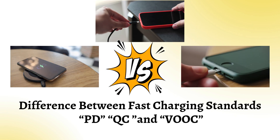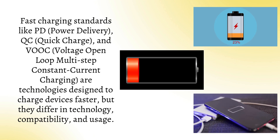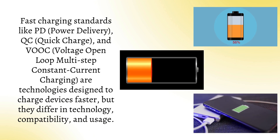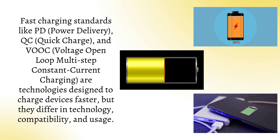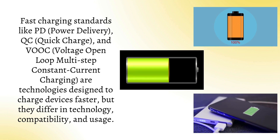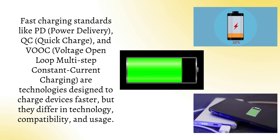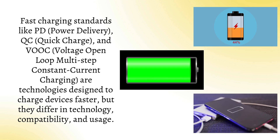The difference between fast charging standards: PD, QC, and VOOC. Fast charging standards like PD (Power Delivery), QC (Quick Charge), and VOOC (Voltage Open Loop Multi-step Constant Current charging) are technologies designed to charge devices faster, but they differ in technology and compatibility.